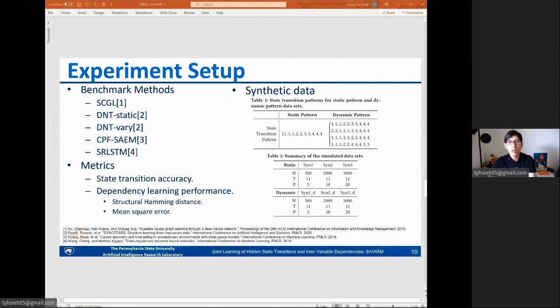I will proceed to share the experiment setup and results. In this study, we compared with state-of-the-art benchmarks, including time series data, static dependency learners SCGL and DNT static, dynamic dependency learners CPF SAEM and DNT vary, and finally hidden-state transition modeling approach SR-LSTM. We compared our model to these benchmarks under state-transition monitoring performance and intervariable dependencies modeling performance. The experiment was conducted with synthetic data, where we designed static pattern data and dynamic pattern data. For static pattern data, every multivariate time series data instance goes through identical hidden-state transition pattern as listed on the left of the table. On the contrary, for dynamic pattern data, every instance goes through a hidden-state transition pattern randomly selected from the four candidates. A summary of the six synthetic data sets can be found in the bottom right table.